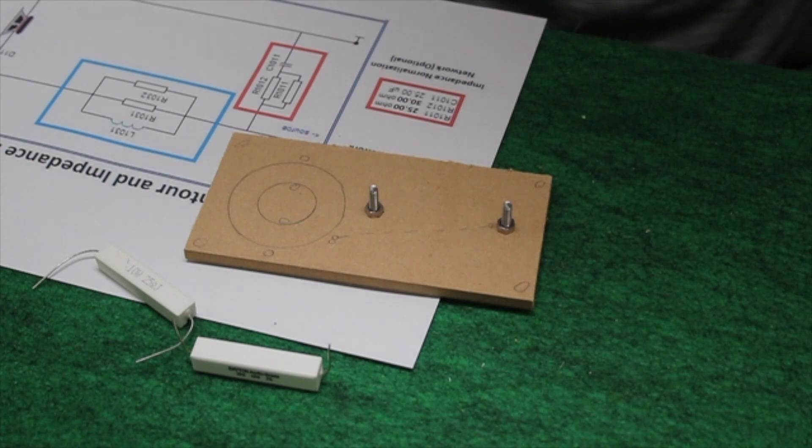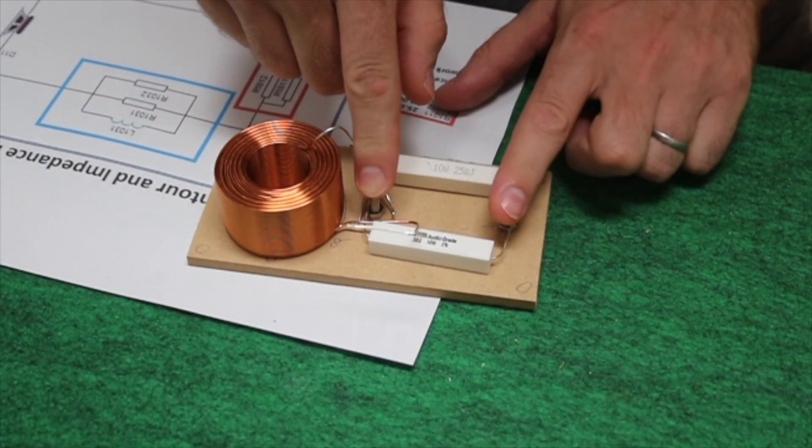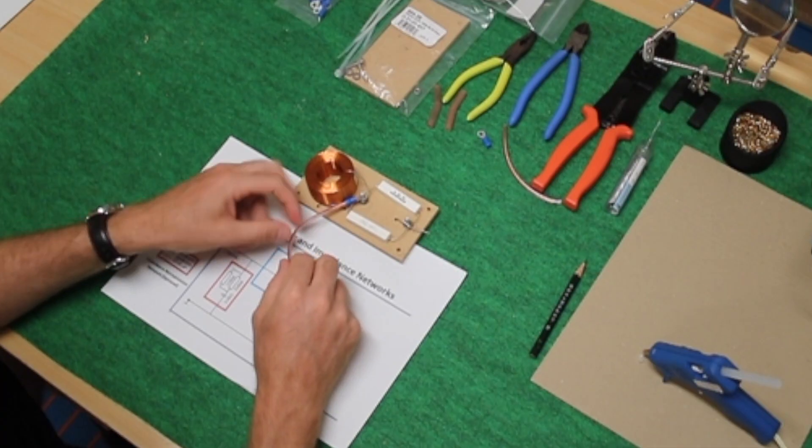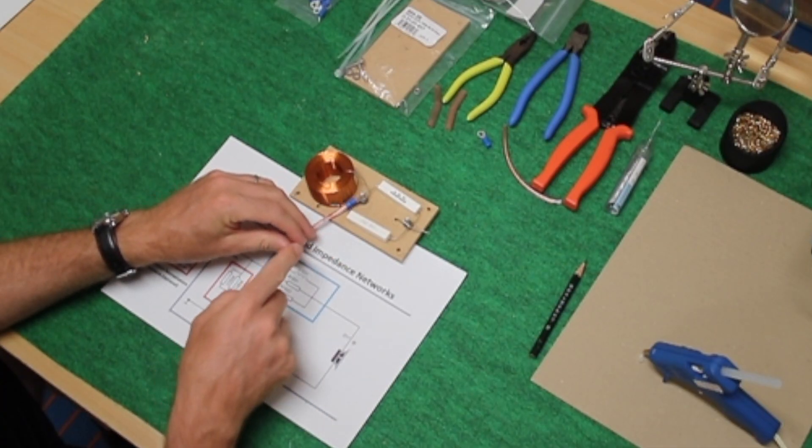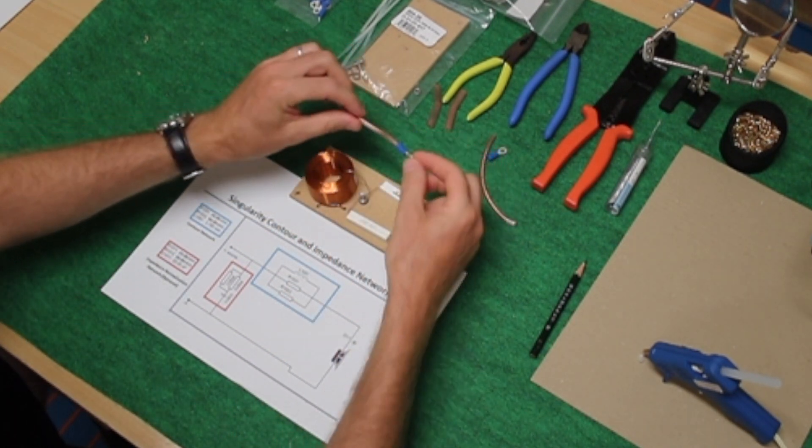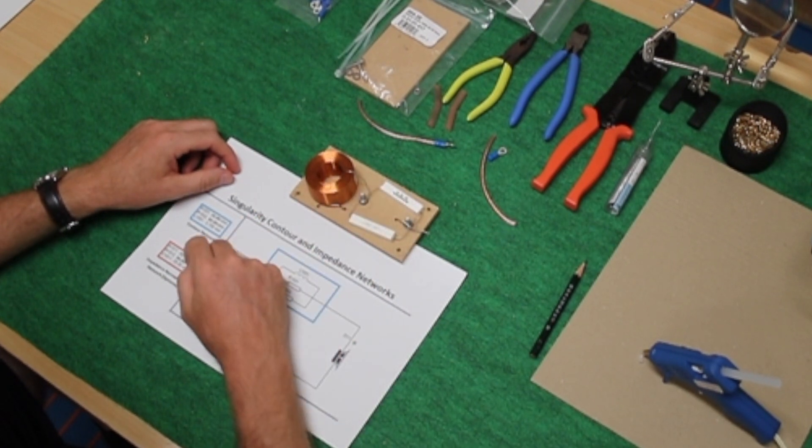So these are going to be my binding posts. The input will go into here, and it'll go from here up to the speaker. This is where the signal will come in. The first task will be just hot glue these guys down.